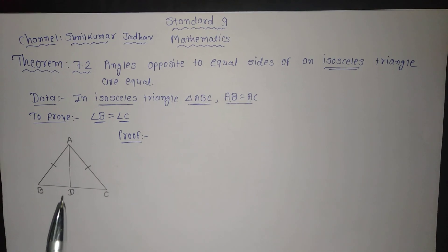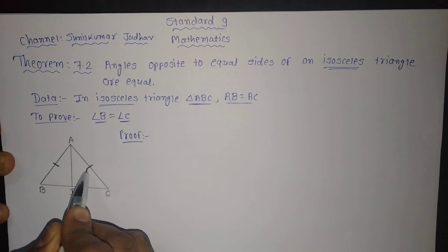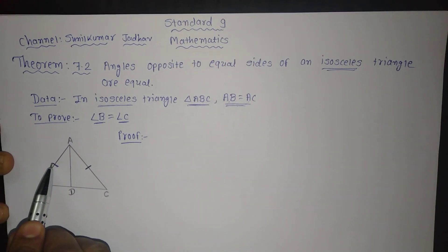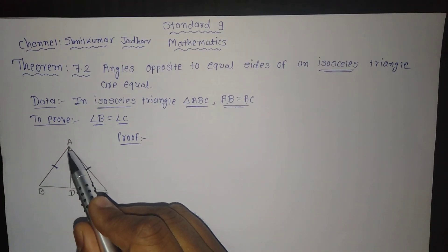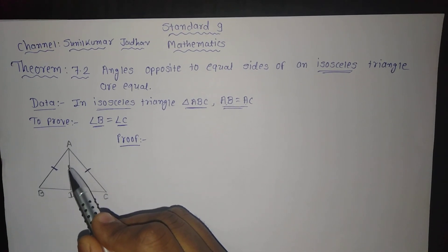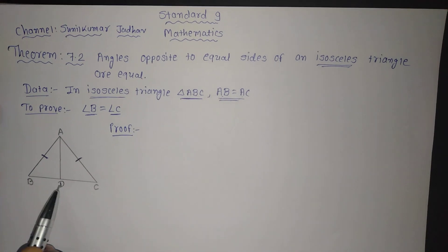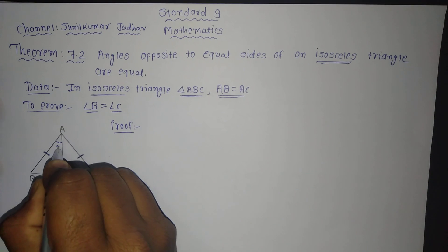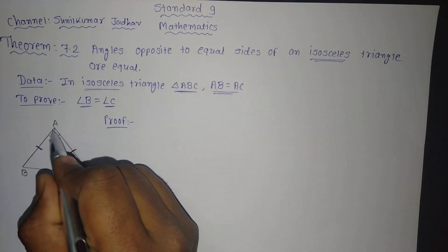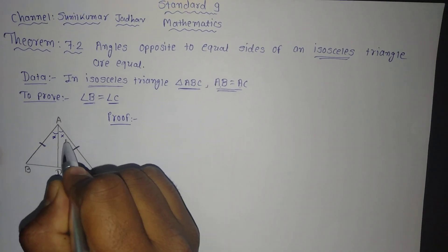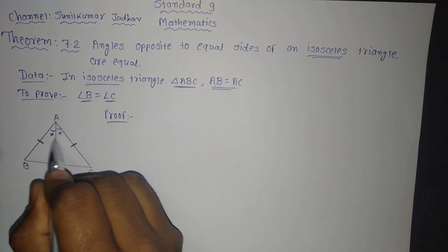Let us begin with the proof. We have triangle ABC in which AB is equal to AC — it is given that AB is equal to AC. Now first of all we will draw the angle bisector of angle A. Let us draw the bisector of angle A which intersects BC at point D. AD is the angle bisector of angle A, meaning angle BAD and angle CAD are both of equal measure.